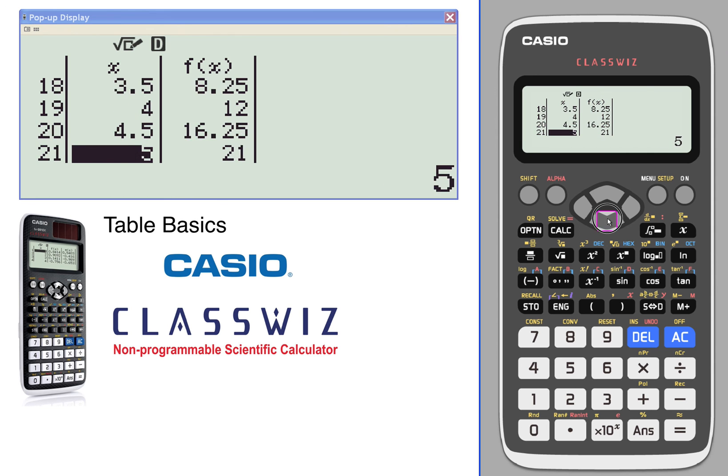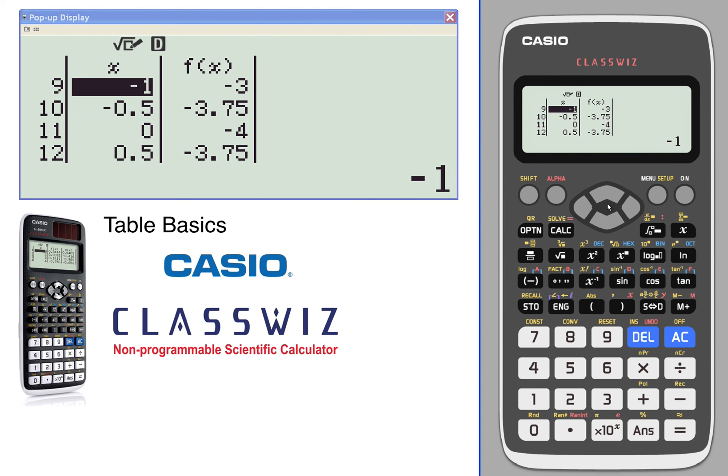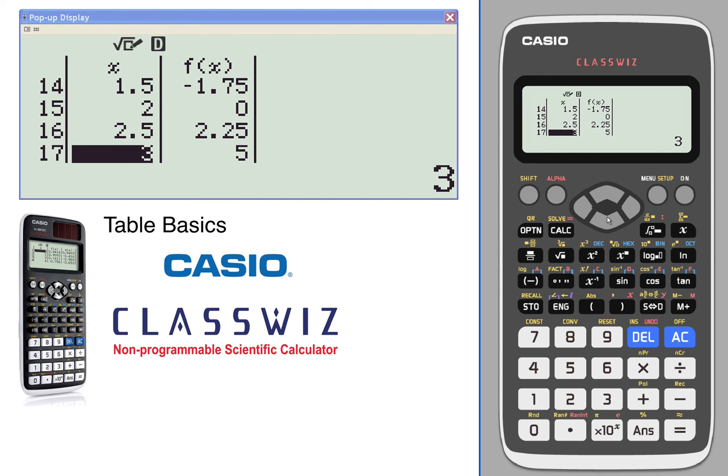The function starts coming back up. We can get a mental picture: on the negative side it's coming down till it reaches a zero, then between zero and two it's negative, and then it comes back up.